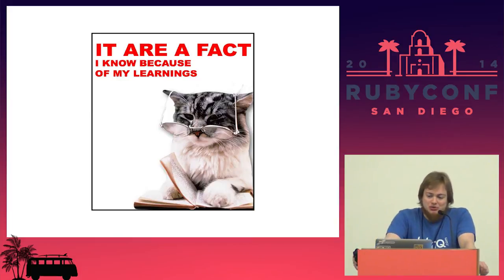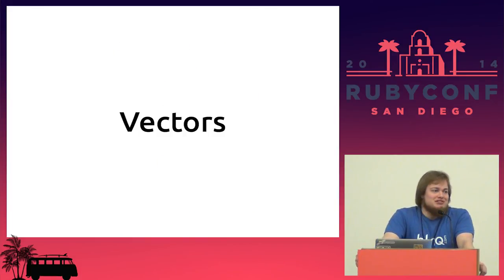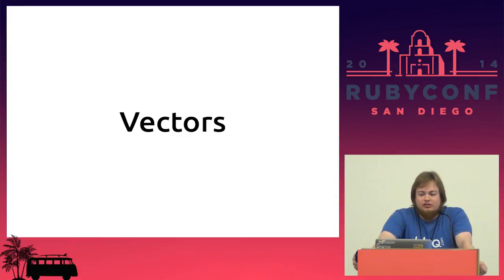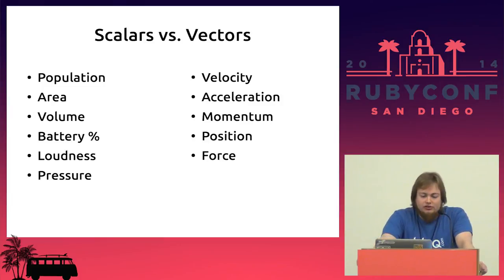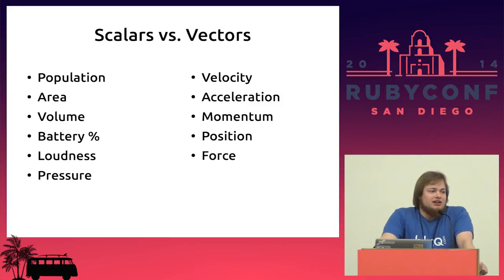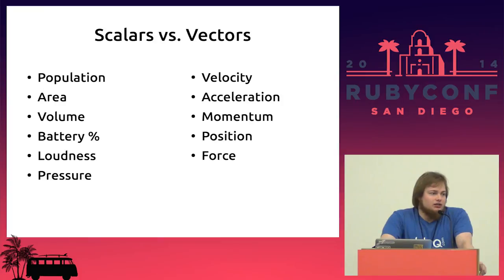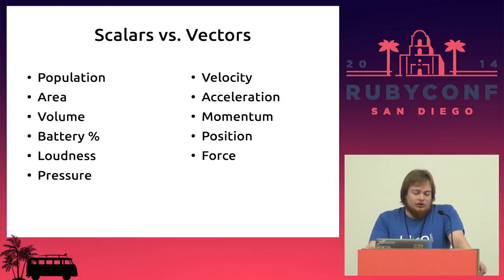Now we all have a basic understanding of how numerical coercion works. We're going to talk about vectors, as they are a great use case for numerical coercion. Vectors are a mathematical object that are ludicrously common in all the sciences — I don't think you can do physics without them. They wrap a magnitude and a direction. Things like population, area, volume, battery percent, and sound pressure are non-directed numbers called scalars. Things like velocity, acceleration, or momentum have a direction, and so they're vectors.